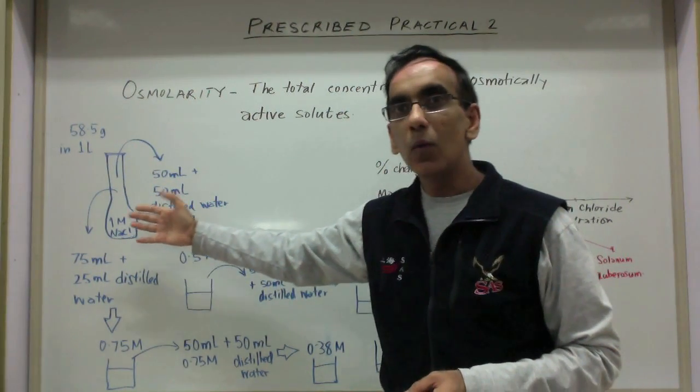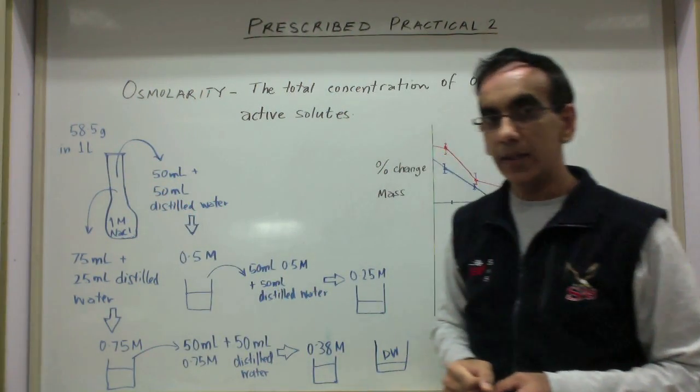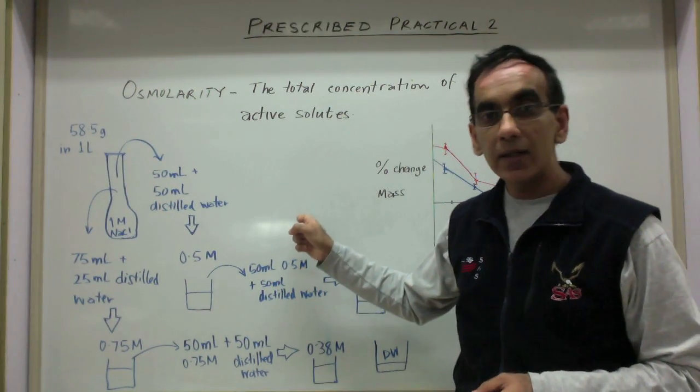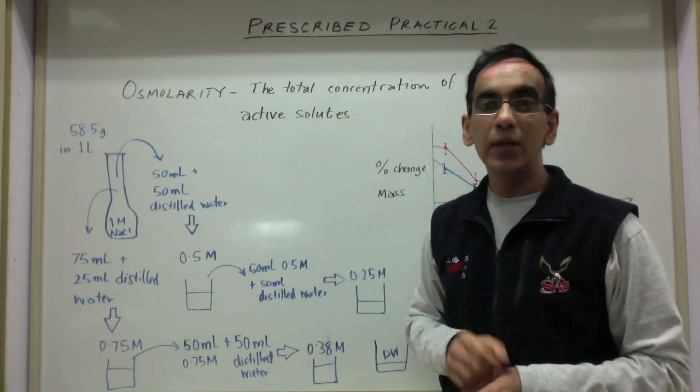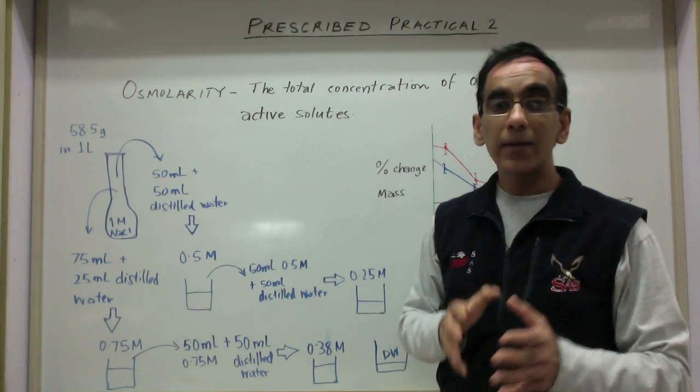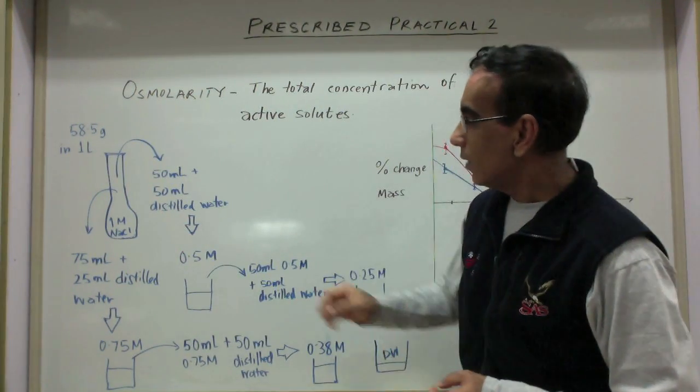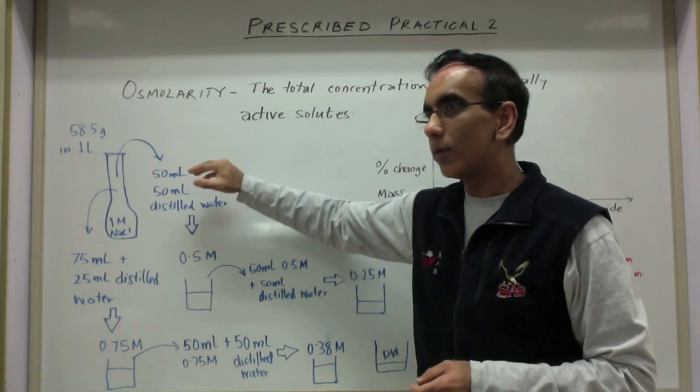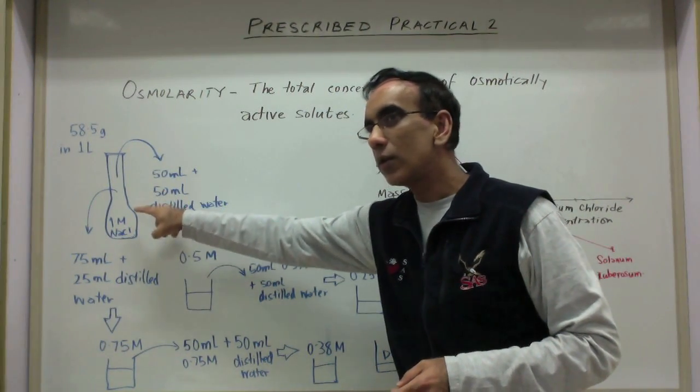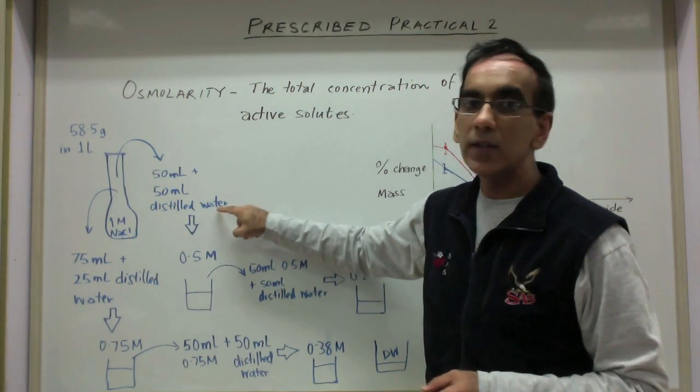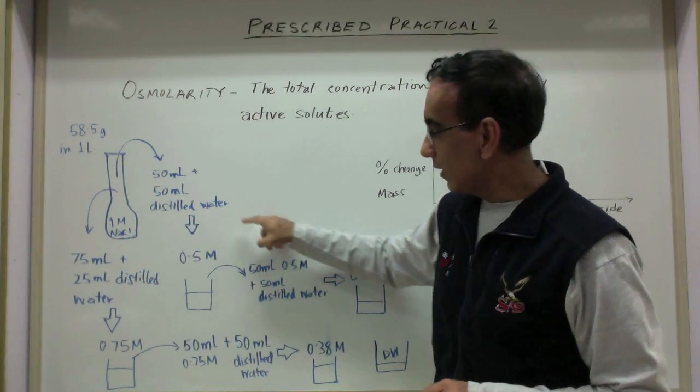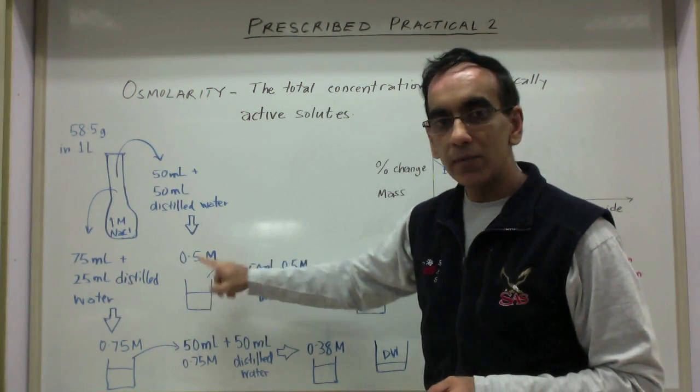This would give you a one molar solution of sodium chloride, but you can click right here to go back to an old video from my chemistry students about how to make solution. Once you've got a one molar solution you can dilute it with 50 milliliters of that original one molar solution with 50 milliliters of distilled water and it would give you a 0.5 molar solution.